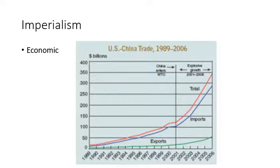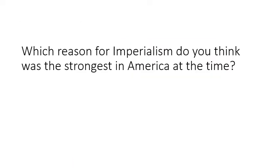Especially when the Depression of the 1890s hit, many Americans' interest in foreign trade became almost obsessive. We see systematic government efforts during this time to promote trade aggressively, which seemed necessary because of the economic depressions, social unrest, and everything that came along with them. Looking at all these reasons for imperialism, here's an opinion question: what do you think was the strongest driving force in America at this time?